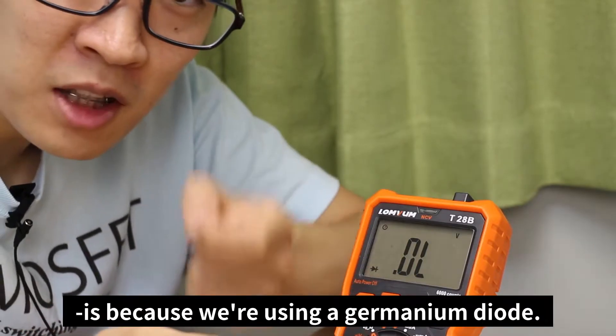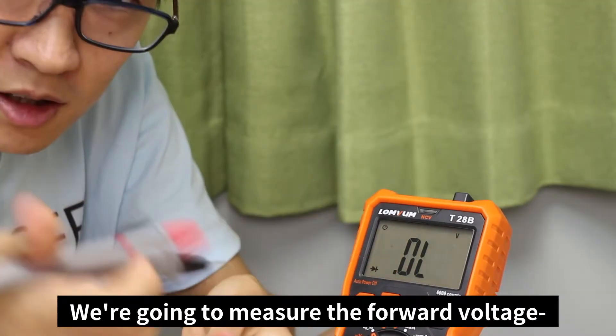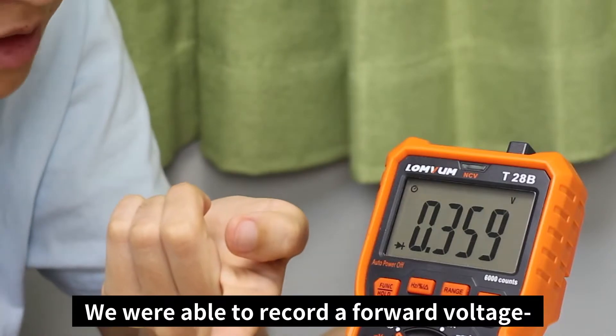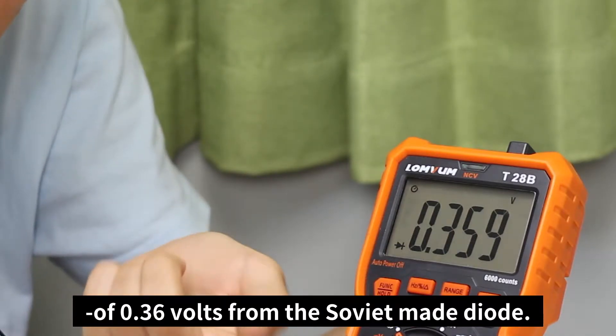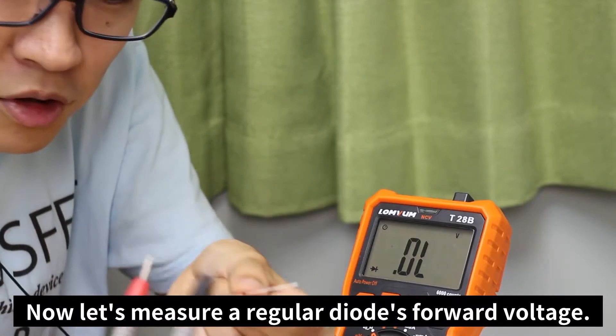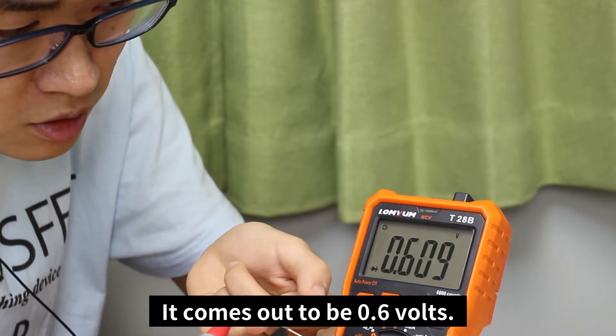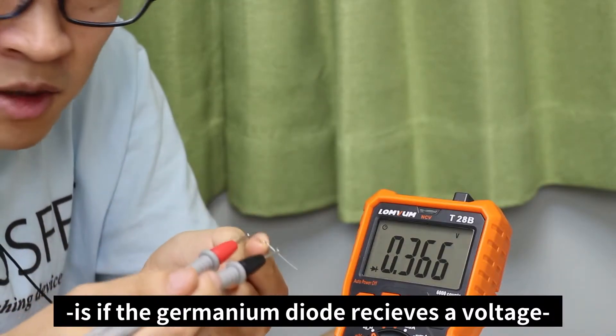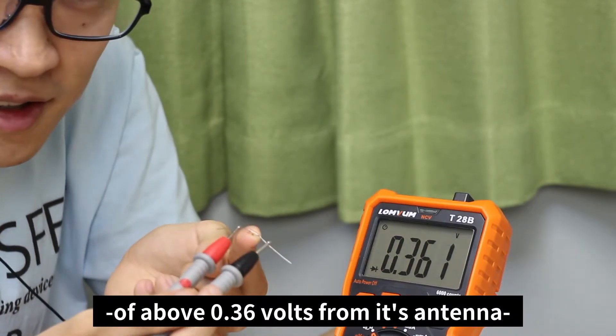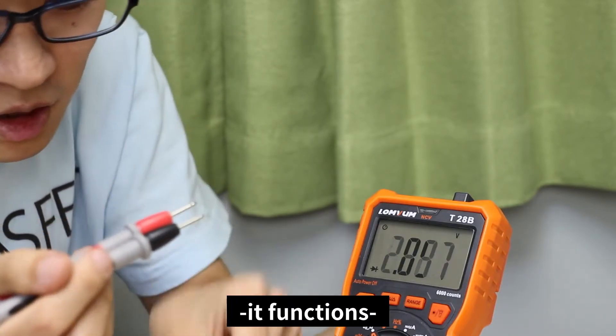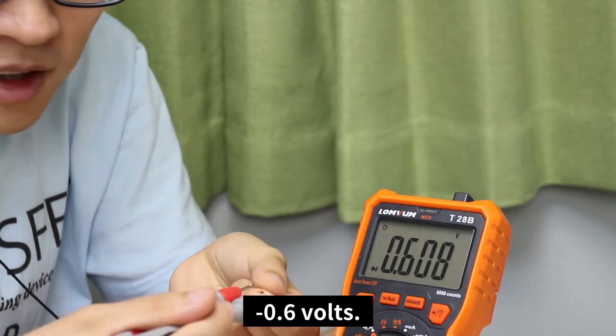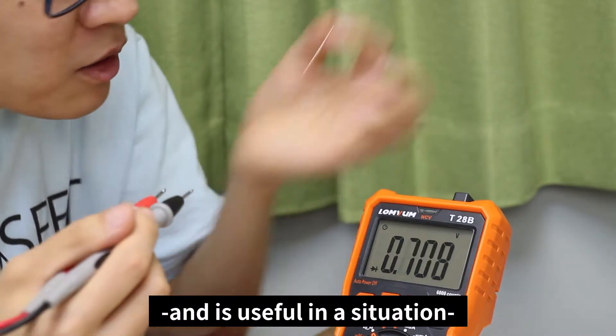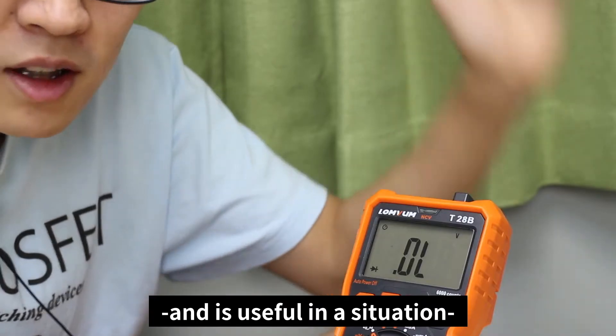Another reason why the sound is clear is because we're using a germanium diode. We're going to measure the forward voltage of the germanium diode using this tester. We were able to record a forward voltage of 0.36 volts from the Soviet-made diode. Now let's measure a regular diode's forward voltage. It comes out to be 0.6 volts. Basically, what this number means is that if the germanium diode receives a voltage of 0.36 volts from the antenna, it functions. But a normal diode requires a voltage of over 0.6 volts. This is the reason why a germanium diode functions even with low voltage and is useful in a situation that does not use a legitimate power source.